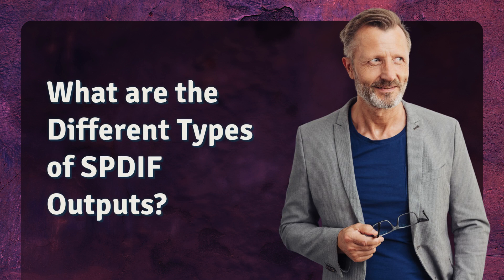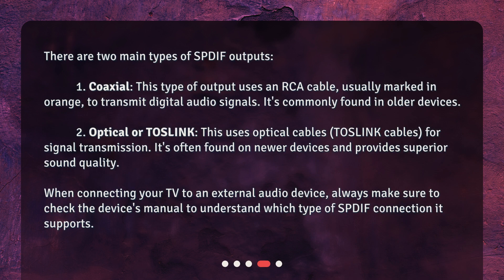What are the different types of SPDIF outputs? There are two main types of SPDIF outputs. The first is Coaxial. This type of output uses an RCA cable, usually marked in orange, to transmit digital audio signals. It's commonly found in older devices.